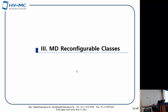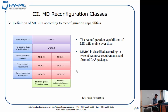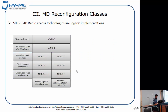Another question: why does my cell phone have to be reconfigurable? Mobile devices can be classified into many groups according to reconfiguration capabilities. Class 0 has low reconfiguration capability; as you go through the classes, reconfiguration capabilities increase. Let's take a little more detail about that.